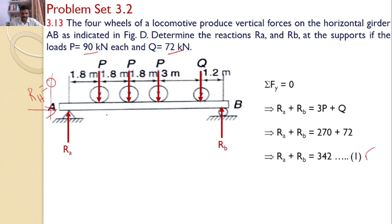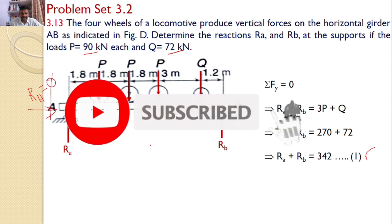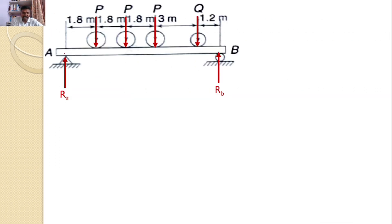Now, let us consider the moments about any point on the girder AB. Let us take the moments about point A. If I take the moments about point A, P will introduce a moment in this direction. This P will also introduce in this direction. This P will introduce in this direction. Q will also introduce in this direction. But Rb will produce a moment opposite to all these things.